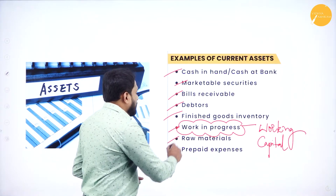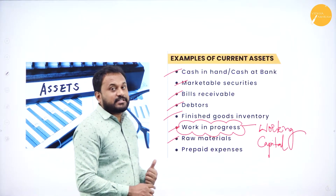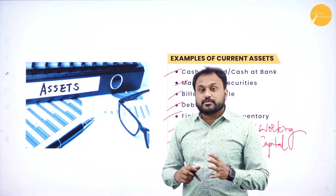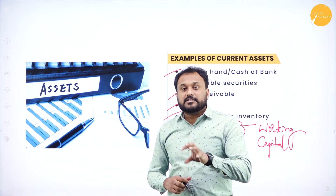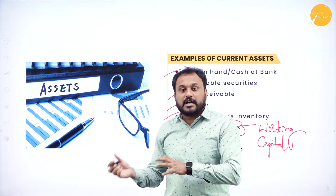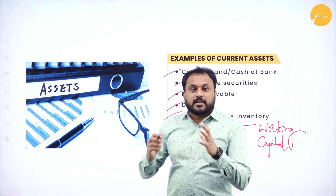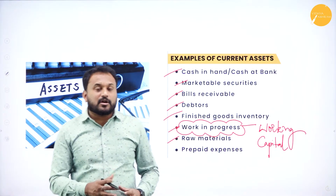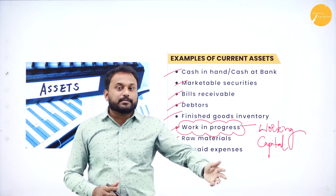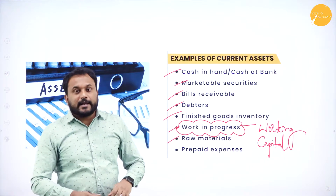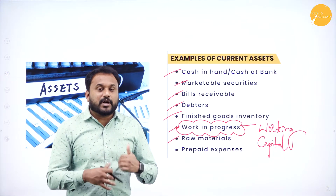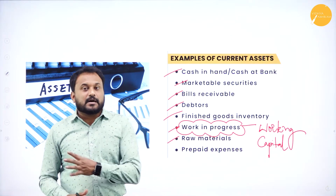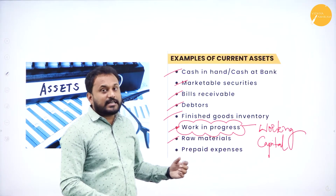Next is raw materials. Raw materials — though it is a variable cost, you should know how raw materials can be a current asset. You have purchased the raw material, and now you don't need it. You will give it back to the person from whom you took it. He will check what you have used and what the value is, and then pay you the amount. That is why raw material is also called a current asset.